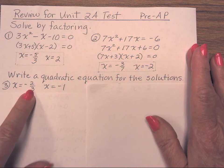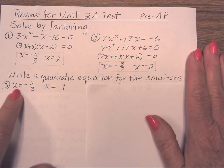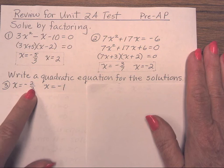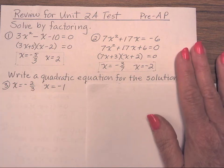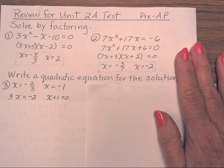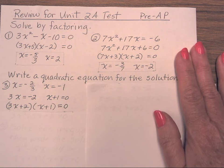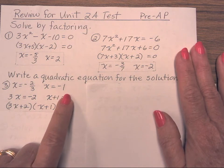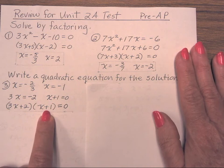When you have a fraction, do it like you're working backwards. The last thing you did was divide by 3 to get your solution, so going backwards, the first thing you do is multiply by 3. When you multiply by 3, you have 3x equals negative 2. And you add 2 to move it over to the other side, and you end up with the factor 3x plus 2. For the second one, all I had to do was add 1 to move it over, so my second factor is x plus 1.